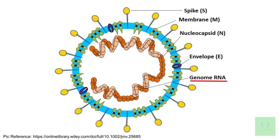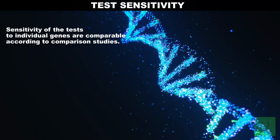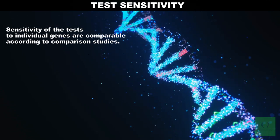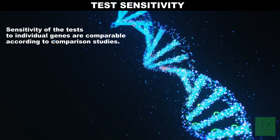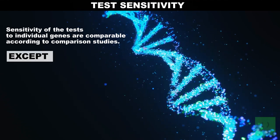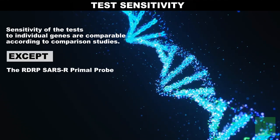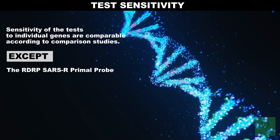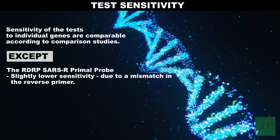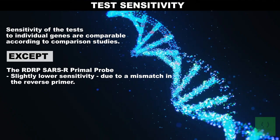And 5. ORF1 genes. The sensitivities of the tests to individual genes are comparable according to comparison studies, except the RDRP SARS-R primer probe, which has a slightly lower sensitivity, likely due to a mismatch in the reverse primer.